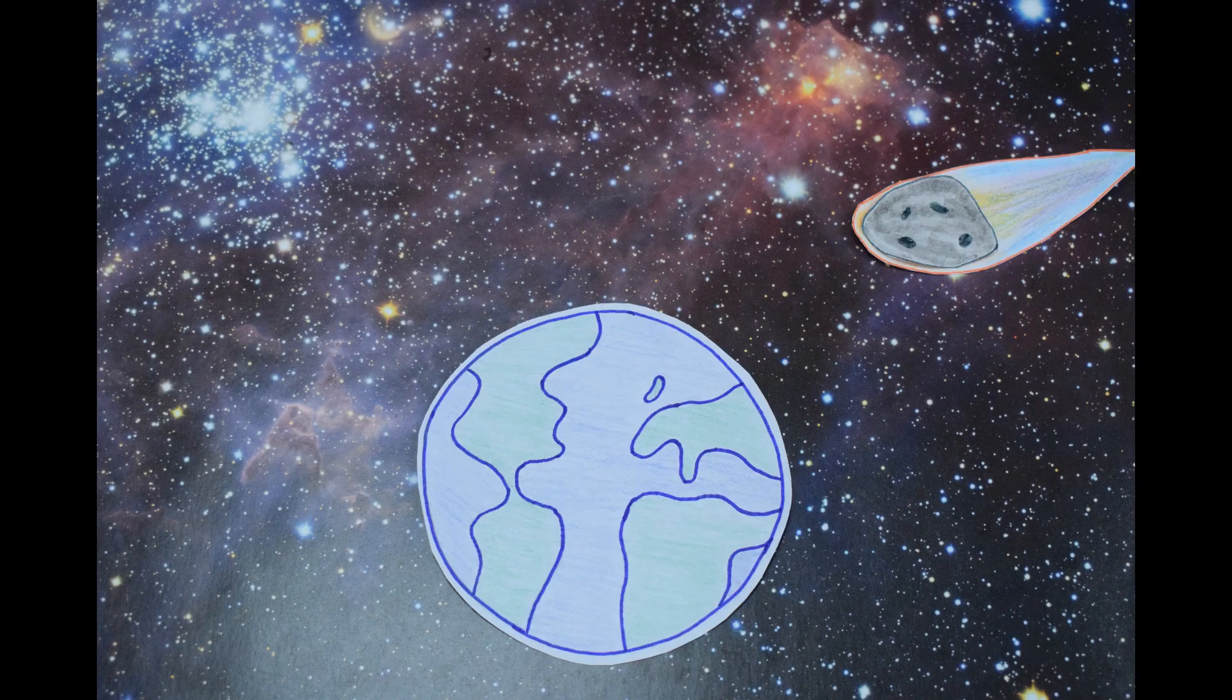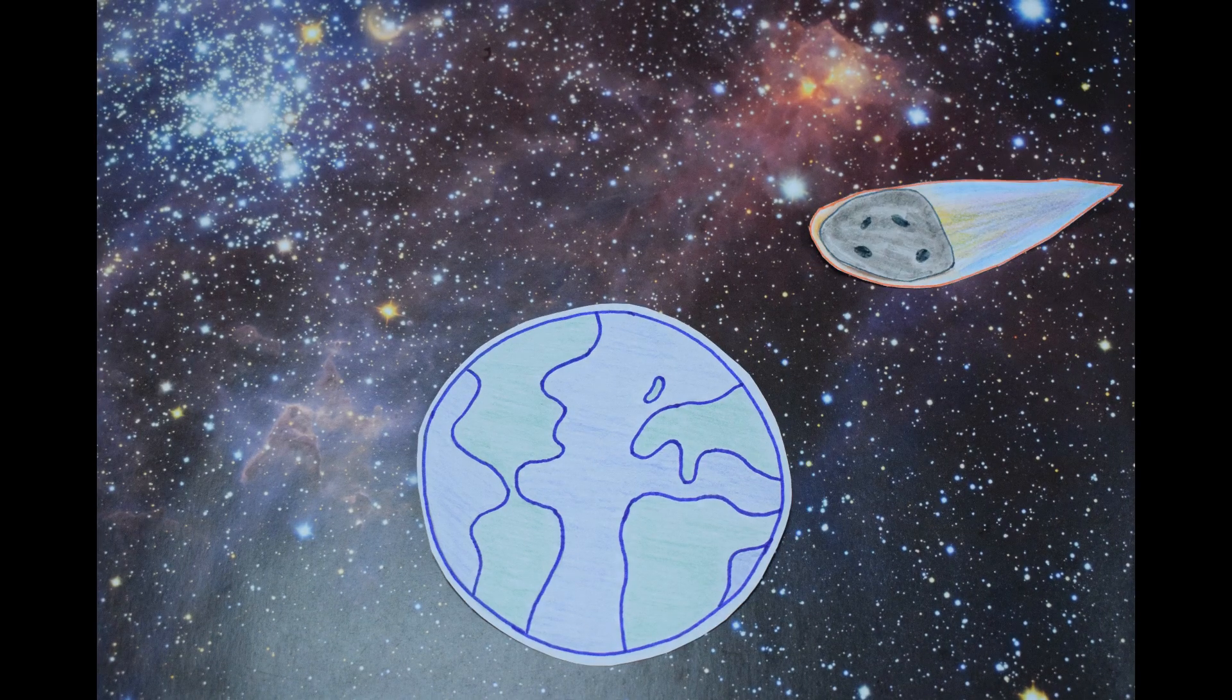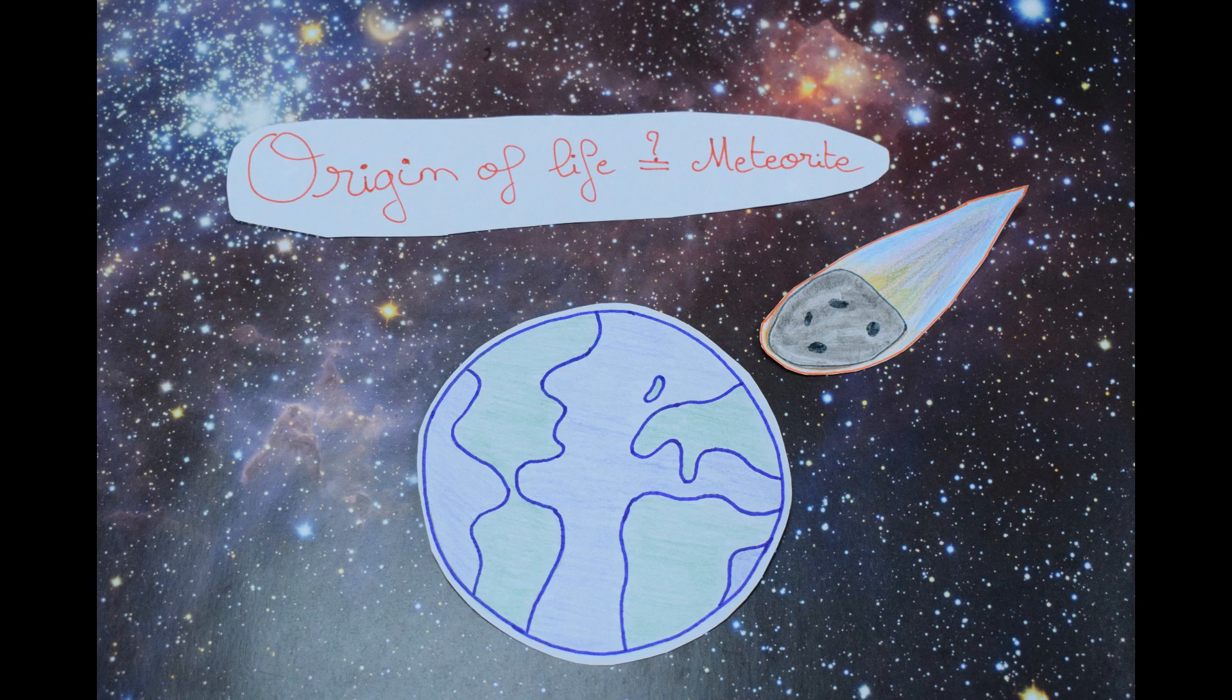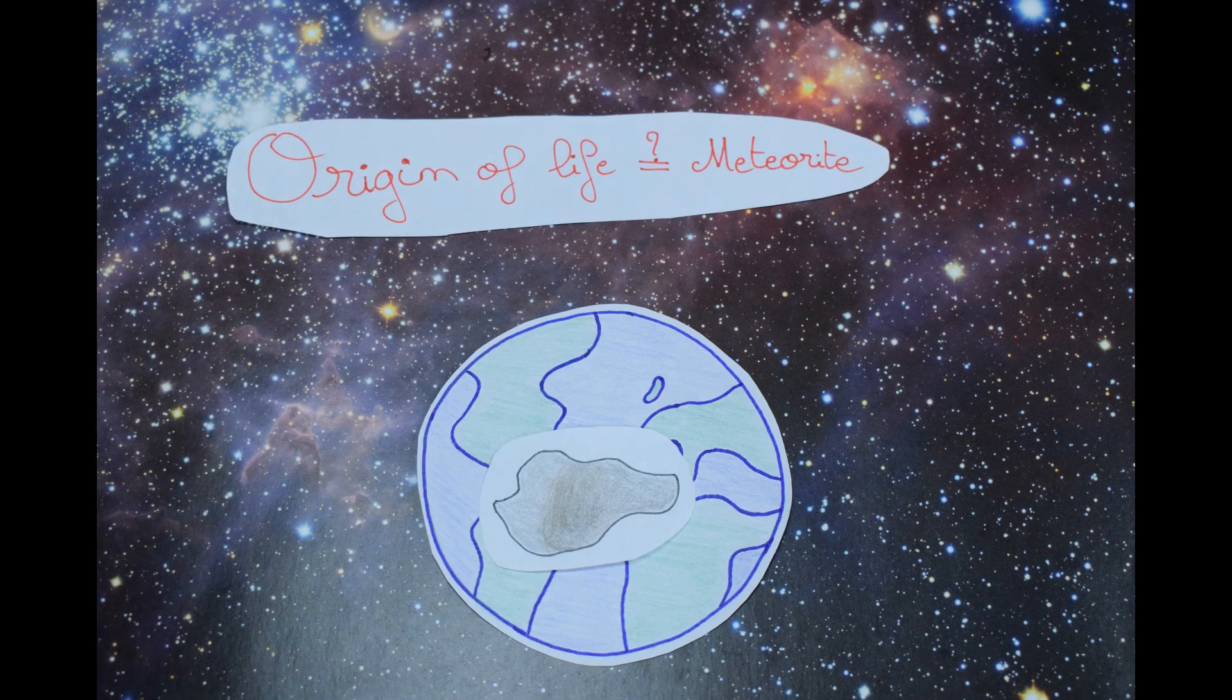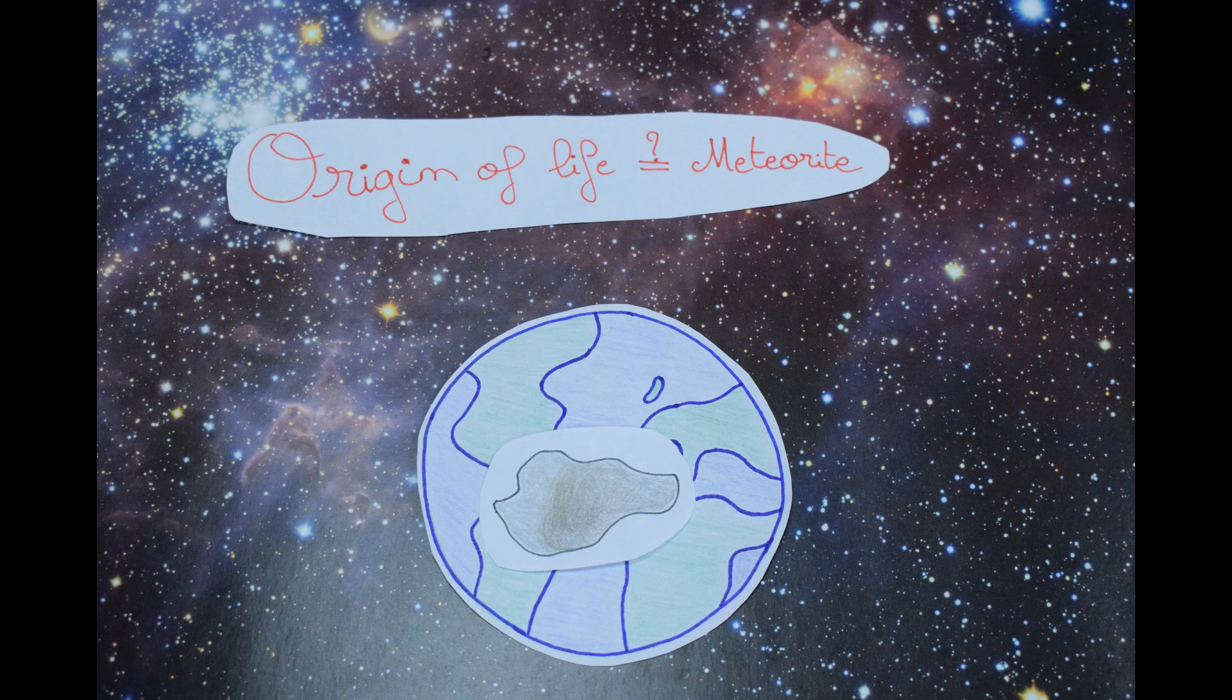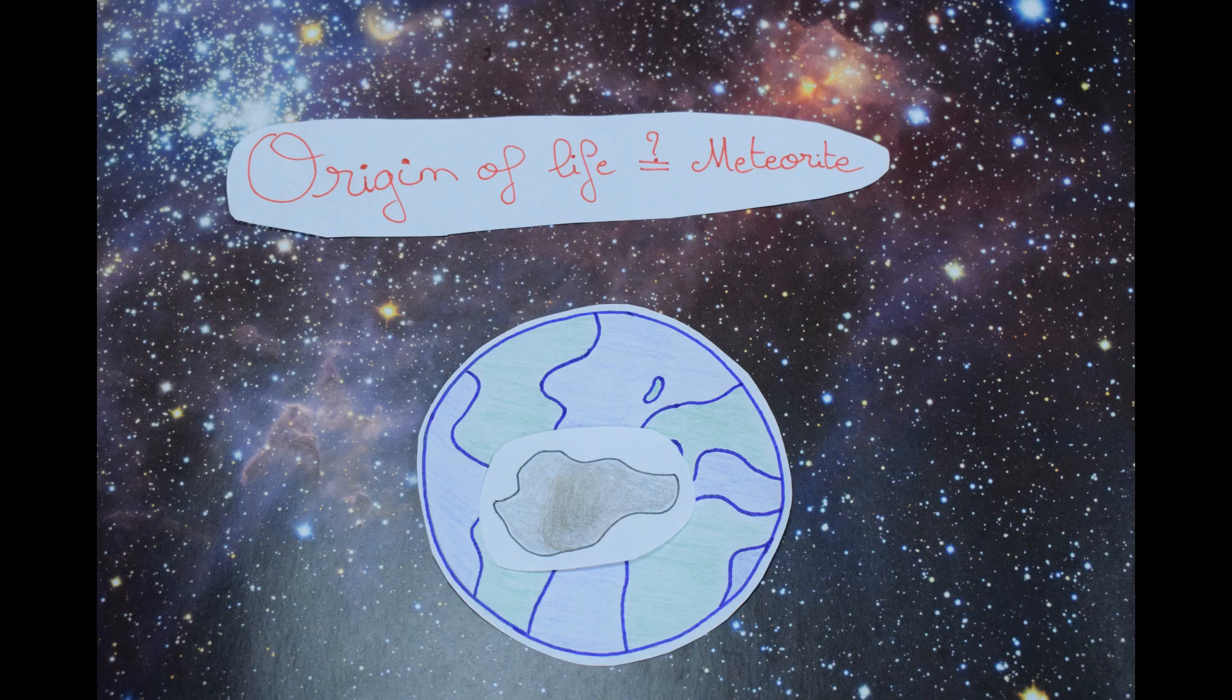So, only traces of life were found by now in extraterrestrial samples. Therefore, it is still unclear if life only comes from meteorites or if meteorites just played a key role by, for example, bringing some of the necessary elements for life.